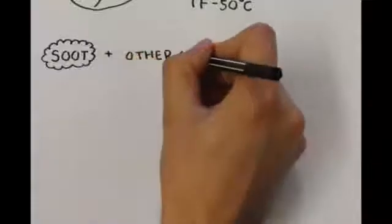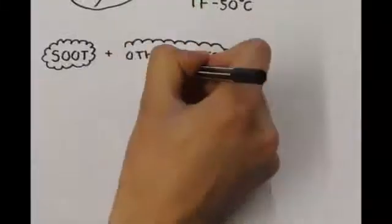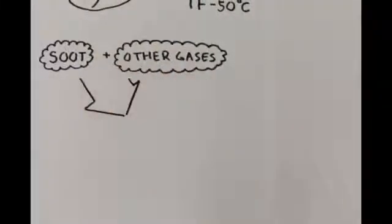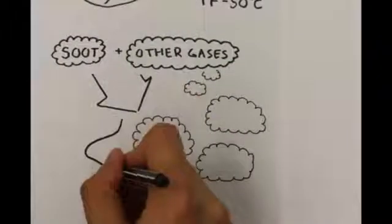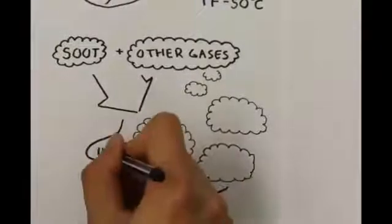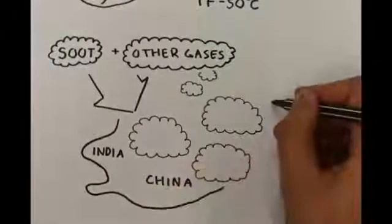Soot, together with other pollutant gases, forms a phenomenon known as brown clouds. Scientists have found five so-called hot spots for brown clouds, of which three are located in Southeast Asia. Some of the clouds have a thickness of up to three kilometers.